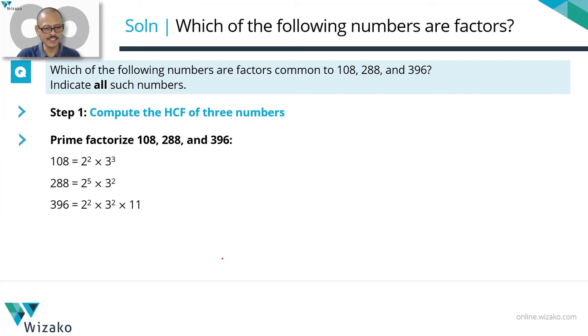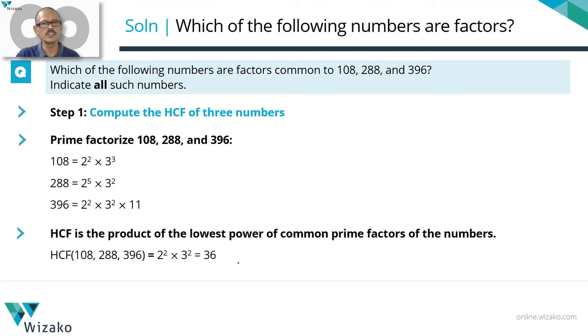Let's consolidate up till this point in a printed form. Step A of computing the HCF, prime factorize the three numbers: 2 squared times 3 cubed, 2 to the power 5 times 3 squared, 2 squared times 3 squared times 11. The HCF is the product of the common primes in their lowest power. Common primes are 2 and 3. Lowest power of 2 and 3 are both 2. So we're going with 2 squared and 3 squared. So the HCF of these three numbers is 36.